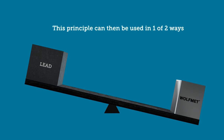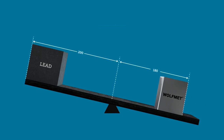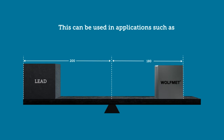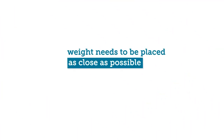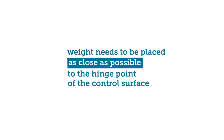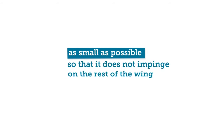This principle can then be used in one of two ways. The first option for the designer is to move the WolfMet weight closer to the fulcrum. This can be used in applications such as aileron balancing, where the weight needs to be placed as close as possible to the hinge point of the control surface. It also needs to be as small as possible so that it does not impinge on the rest of the wing.